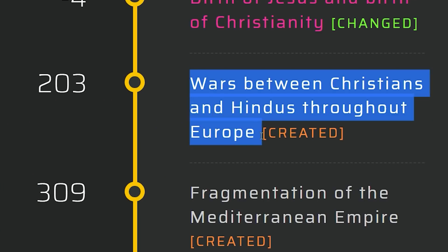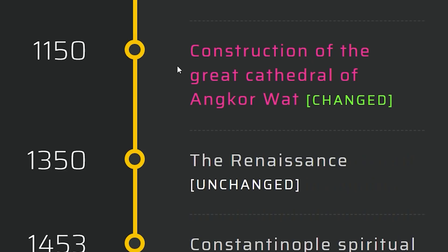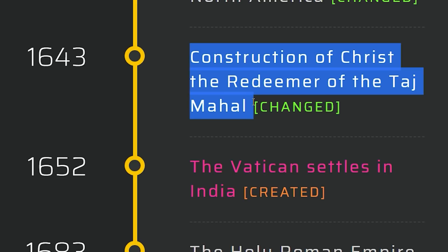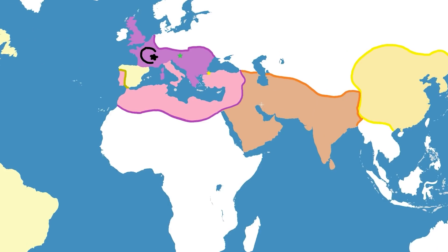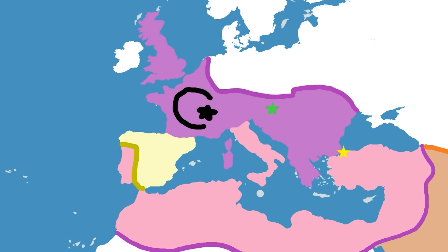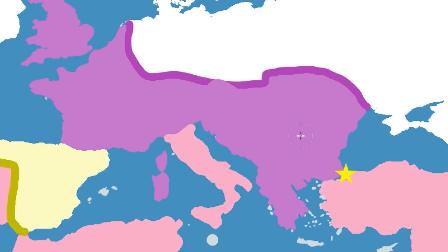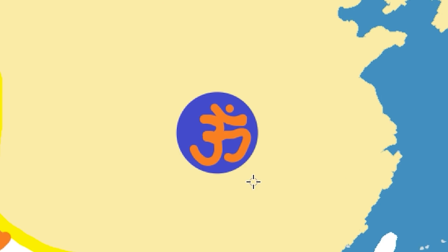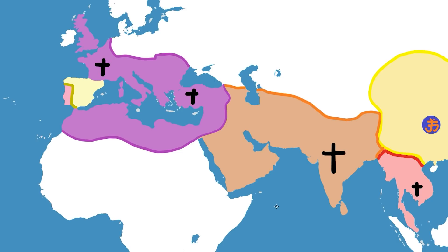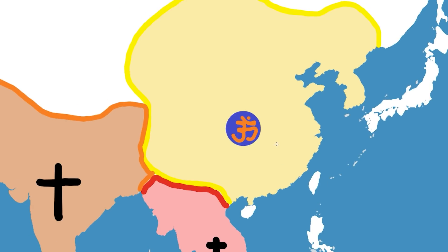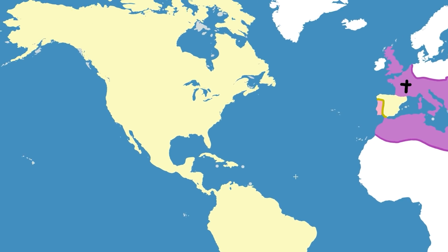Wars between Christians and Hindus throughout Europe. I think I've got to redo my whole map now. Christianity is spreading in India by 805. Construction of the Great Cathedral of Angkor Wat. Construction of the Christo Redentor of the Taj Mahal. The Vatican settles in India. It sounds like Hinduism is still around except it now exists in China. World religion extends all the way to Southeast Asia because the Angkor Wat is now a cathedral. Which also makes all of America probably Christian, since Spain colonized that.